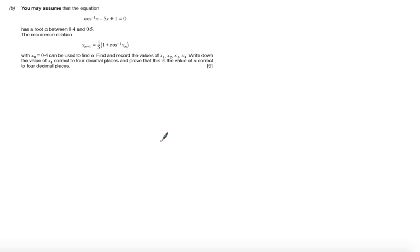Part B says, you may assume the equation cos to the minus 1 of x minus 5x plus 1 equals 0 has a root alpha between 0.4 and 0.5. The recurrence relation x sub n plus 1 is one-fifth of 1 plus cos to the minus 1 of x sub n.